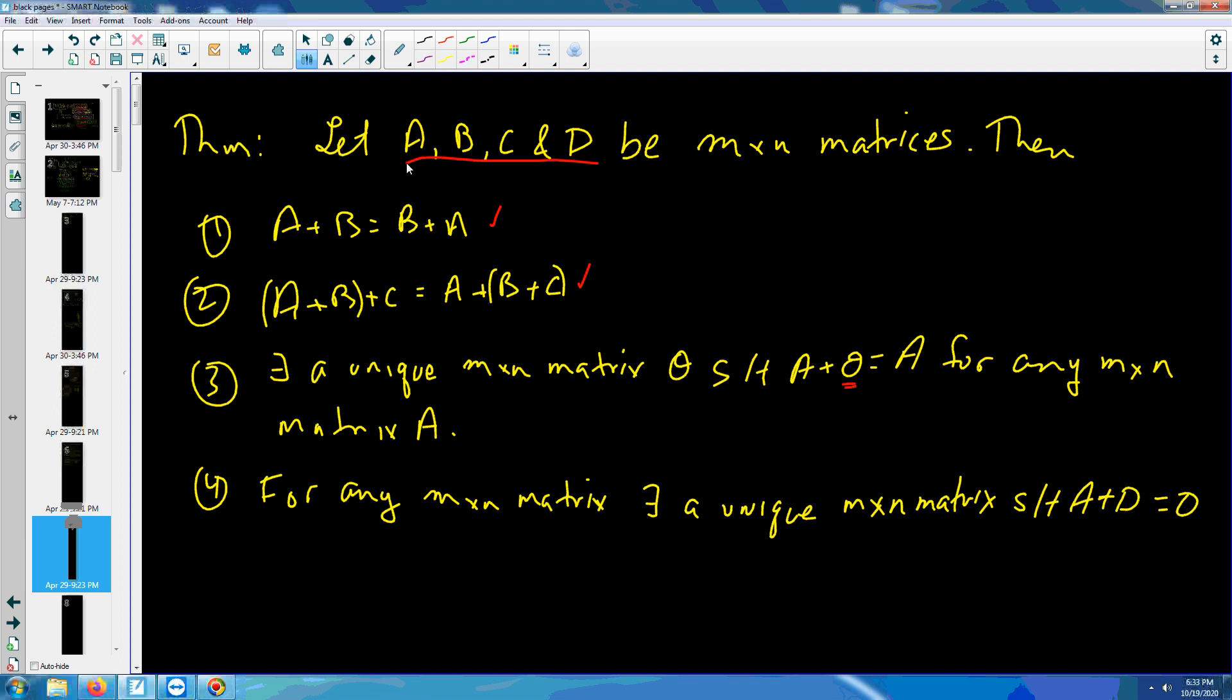An n by n identity element. And for any n by n matrix A, there exists another n by n matrix where it's their inverse.